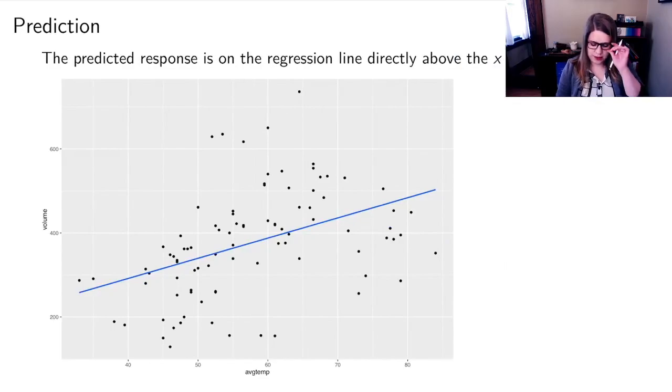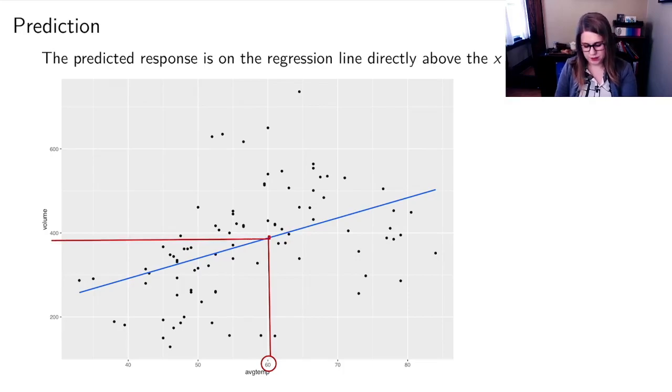So if we wanted to visualize that prediction, we would think about our x value. So here I am at 60 degrees, I would go straight up, and I would say my prediction is going to be right on the line. And then if I wanted to, I could read over on my plot, and that would be my predicted value, that's the 388. So you can actually just estimate predictions if you have the picture of the line. It's not as accurate as using the equation of the line, but it's another way to come up with predictions.